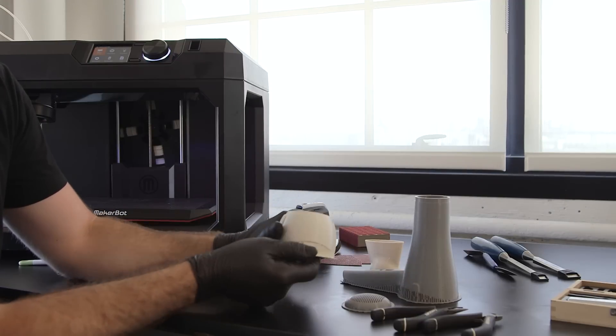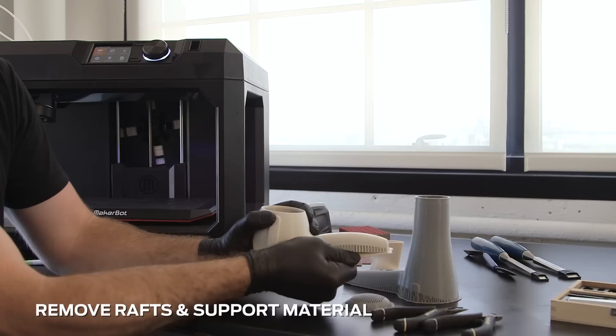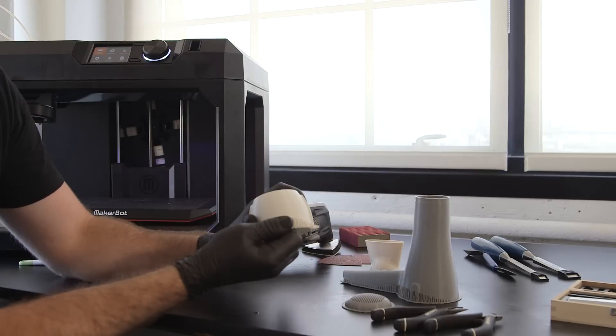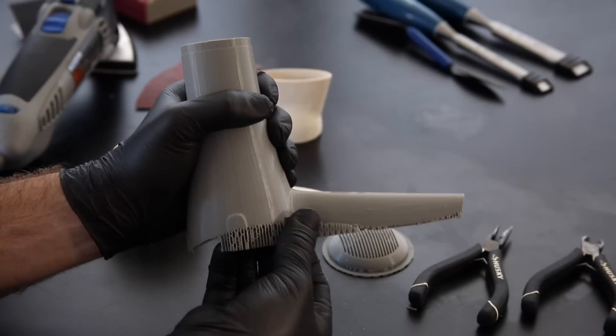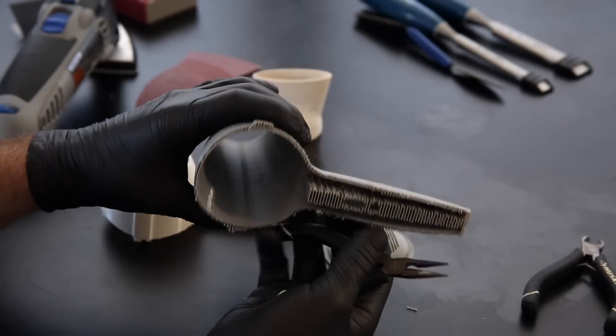Once your part is free from the build plate, remove rafts and support material from the model. Be sure to wear eye protection. Remove large pieces of support first, and then approach smaller pieces and fine details.